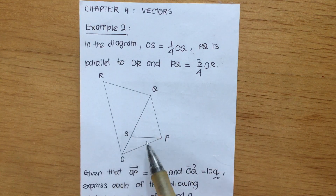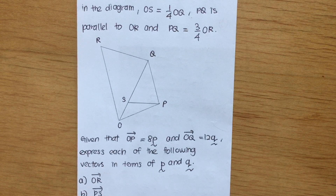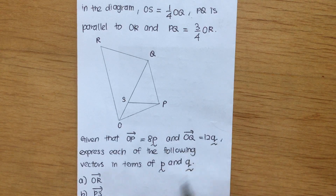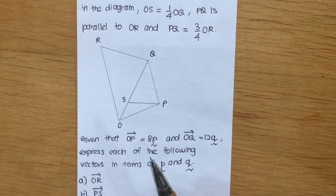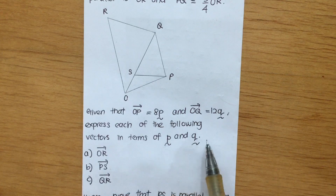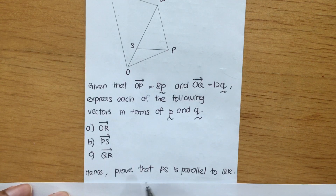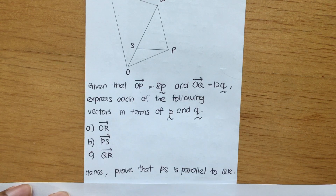These 3 triangles form together to make a big trapezium. Given that Vector OP is equal to 8p and Vector OQ is equal to 12q, express each of the following vectors in terms of components p and q. The question asks us to find Vector OR, Vector PS, and Vector QR in terms of p and q. Hence, prove that PS is parallel to QR.